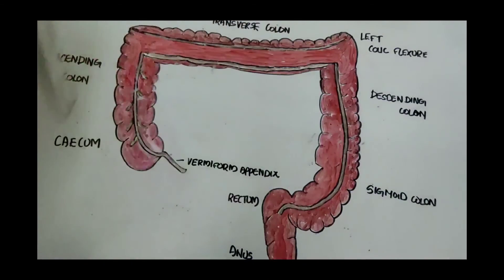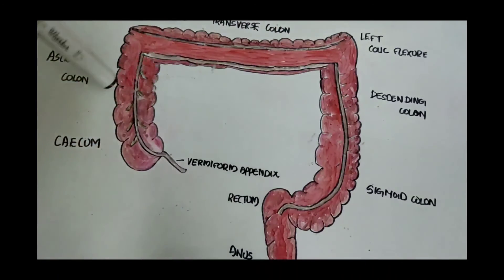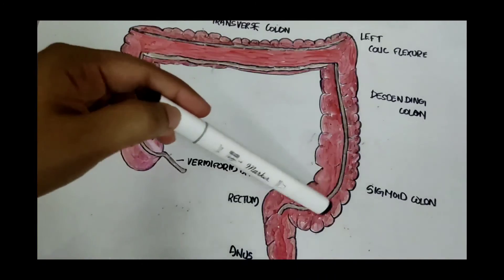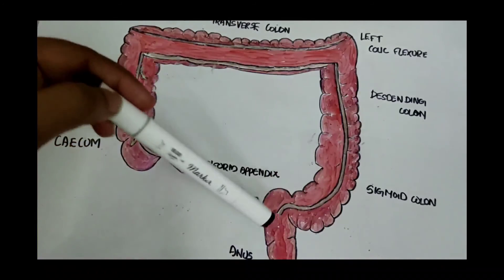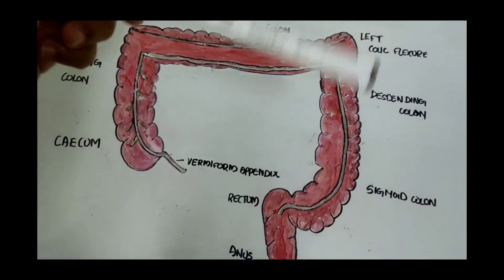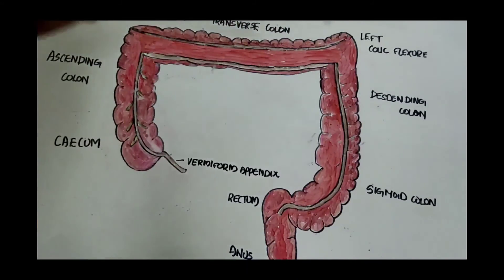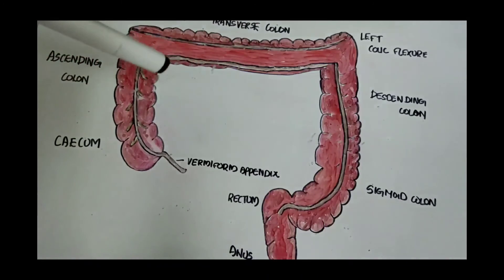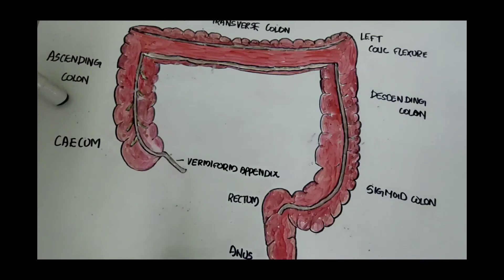Today we discussed the large intestine. The parts are the cecum, ascending colon, transverse colon, descending colon, sigmoid colon, rectum, and anus. It is about 1.5 meters long, and its functions are storage as well as the elimination of fecal matter.